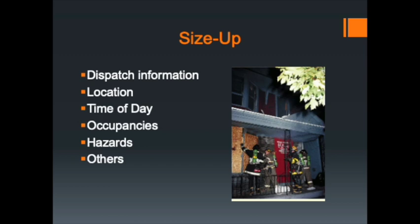Think about the location of the incident — the physical location or the type of incident. If we're responding to a residential, commercial, or mixed occupancy, think about how that may change your search tactics and the size or layout of the building. A residential building may have two to three bedrooms, a kitchen, and a living room. An apartment building may have long hallways with small bedrooms off a common area, or you may be dispatched to a mixed-use occupancy with a mercantile store on the first floor and apartments above.